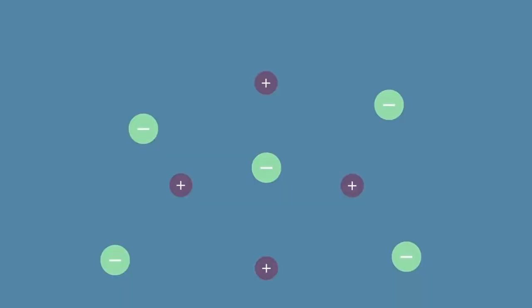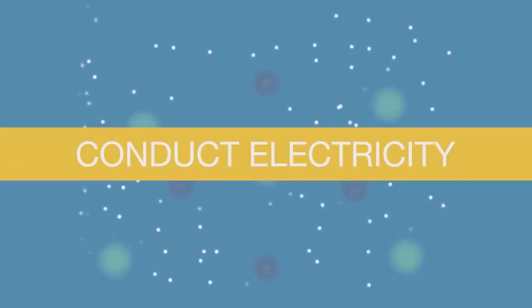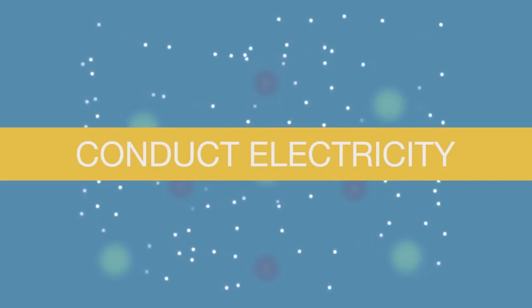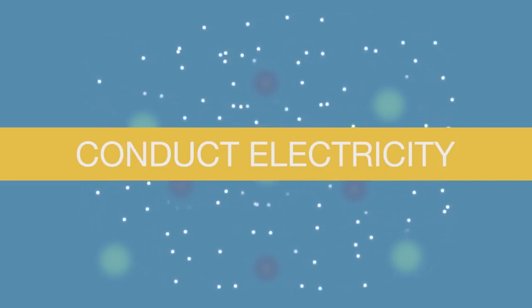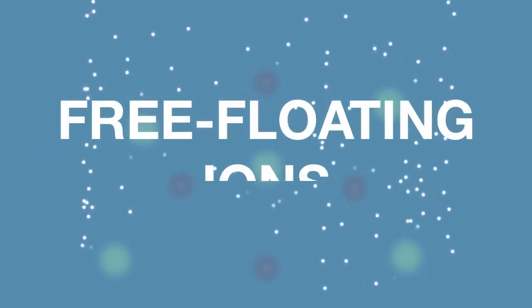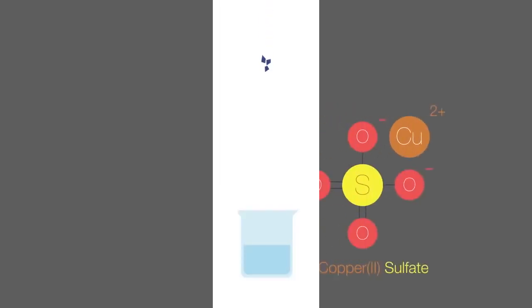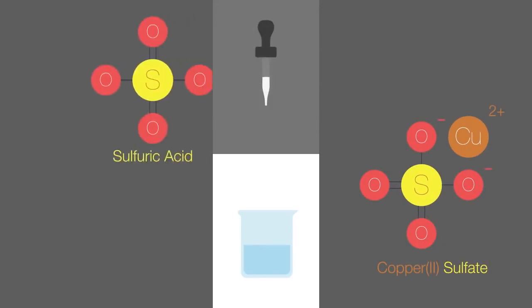An ionic compound dissolved in water can conduct electricity. This is another key property of ionic compounds, made possible due to the presence of free-floating ions. We can dissolve copper-2-sulfate in water in a beaker and add a few drops of sulfuric acid.